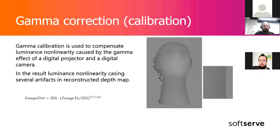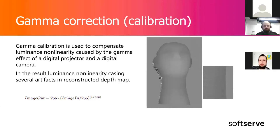One of the middle steps is to make the gamma correction calibration. The projector luminance is non-linear, so we need our fringe patterns — which we will project to extract the depth map — to be very linear in order to get maximum information from the pattern reflection. We need to account for the gamma effect and make some additional gamma calibration.